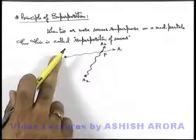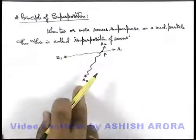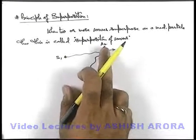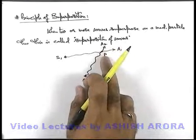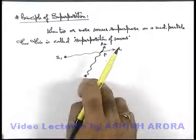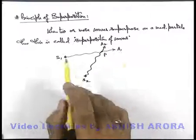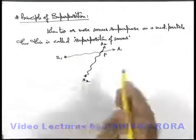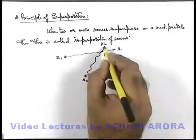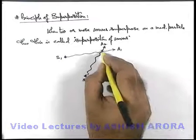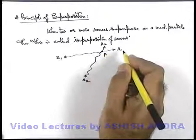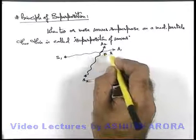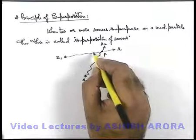Similarly, if S1 is switched off and only S2 is oscillating, then P will execute simple harmonic motion with amplitude A2, and its motion equation will be given by the simple harmonic wave equation governed by source S2. Now if both sources are switched on simultaneously, then at point P both waves will arrive and P will oscillate in an altogether different manner — or you can say the oscillations of P will be modified when it is oscillating under the influence of both waves.